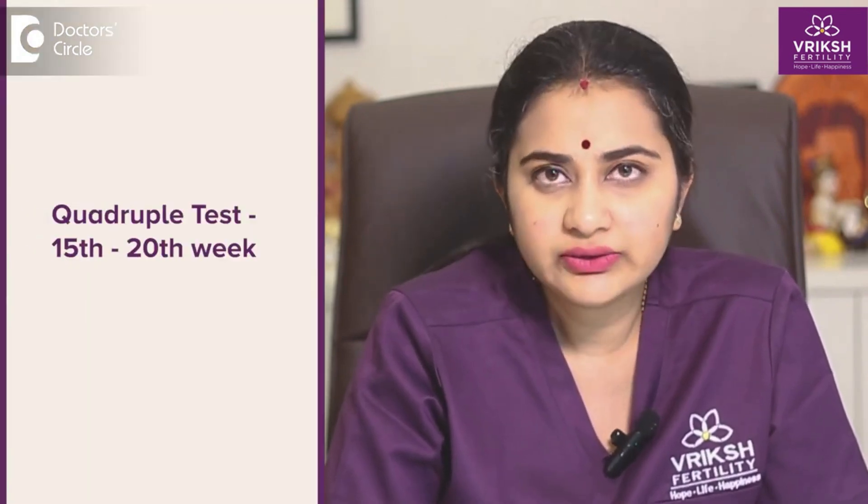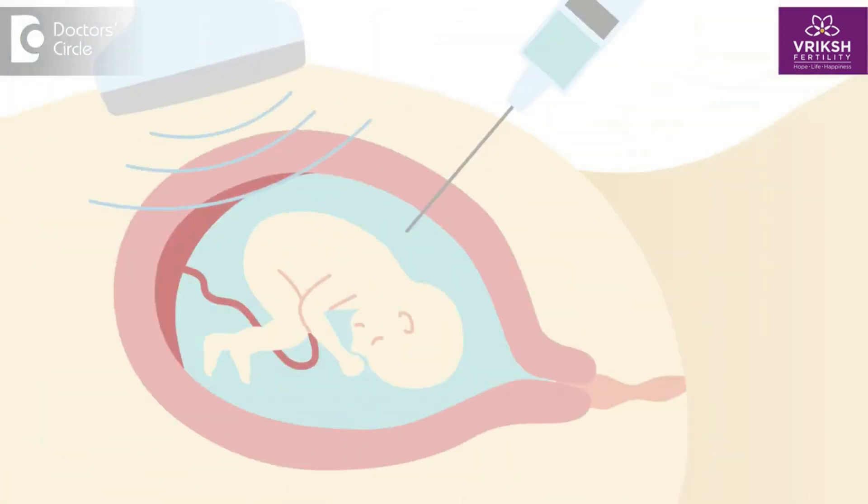The third test is the quadruple screening test, usually done between the 15th and 20th week. If the couple has missed the double marker or NIPT test, the quadruple marker test is suggested. The fourth test is an invasive form of testing wherein, under ultrasound guidance, we take a sample from the amniotic fluid and send it for DNA testing — this is called amniocentesis or chorionic villus sampling, depending on when it is done and what mode of testing is used.